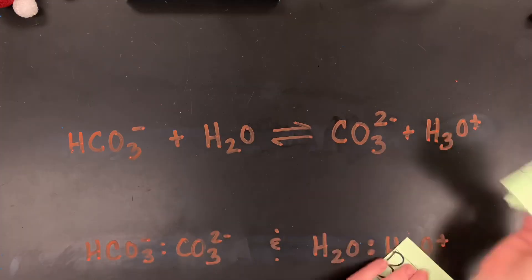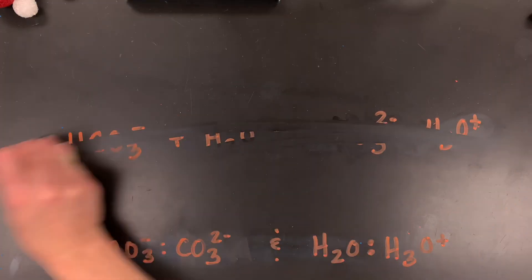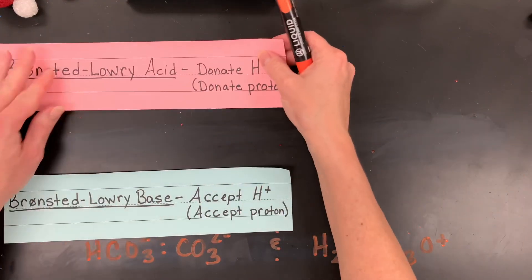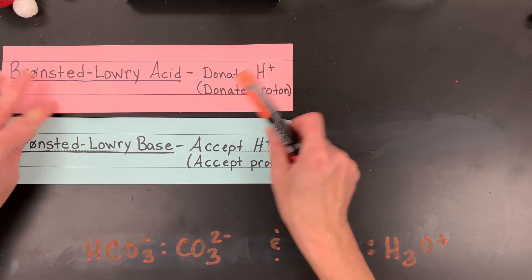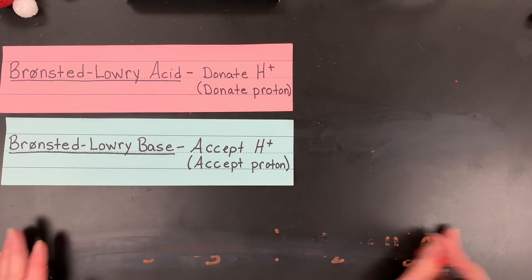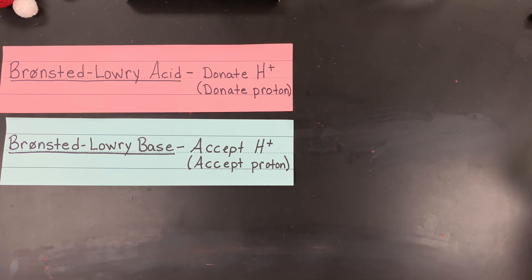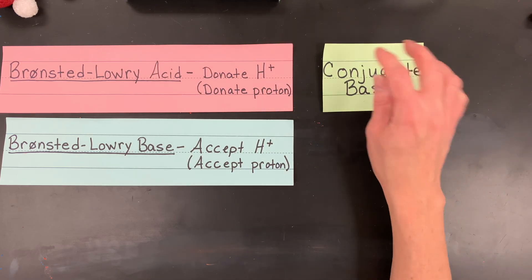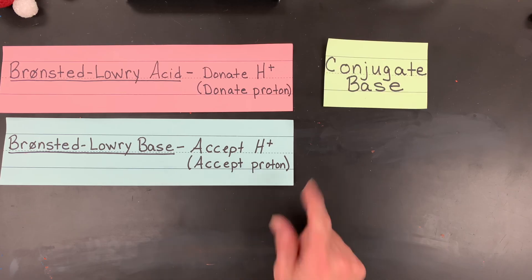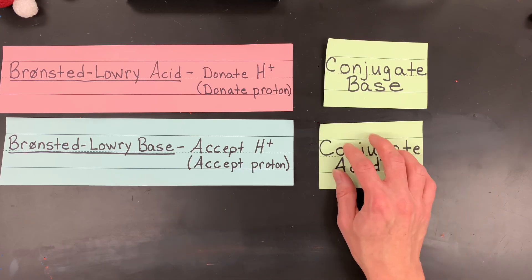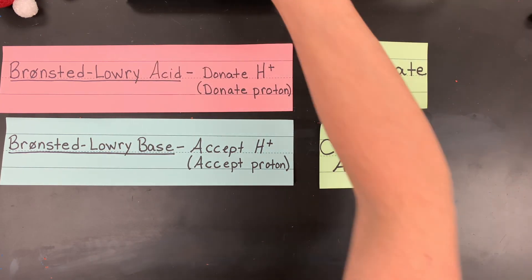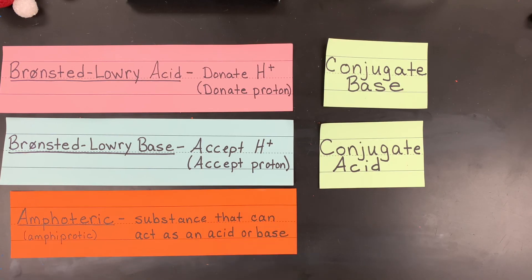So here are our Bronsted-Lowry definitions again. An acid always pairs on the product side as a conjugate base, and a base always pairs with a conjugate acid from the reactant to product side. There is the possibility of amphoteric substances — water is the most common, but there are others like bicarbonate.